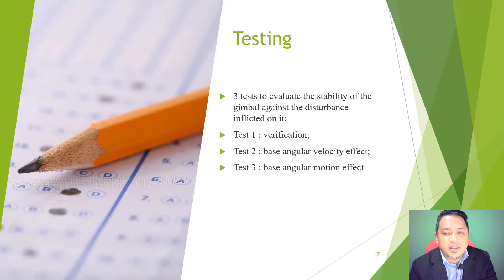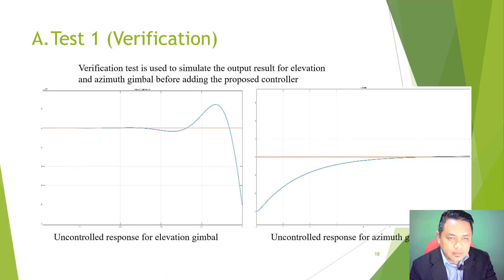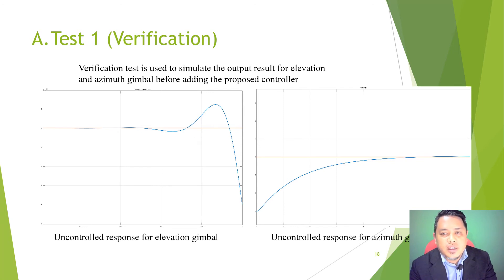Then we go to the testing. We have three tests to evaluate the stability of the gimbal against inflicted disturbance. First, verification. Second, base angular velocity effect. Third, base angular motion effect. Test one — verification: the verification test simulates the output result for elevation and azimuth gimbal before adding the PID controller. Figures 7 and 8 show the uncontrolled gimbal system without PID. The result shows that the response of the elevation and azimuth channels is unstable.